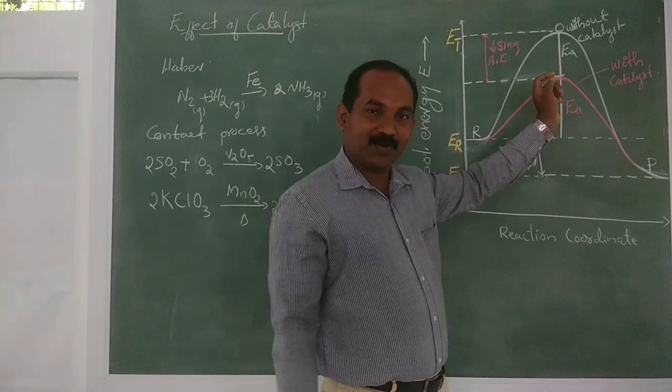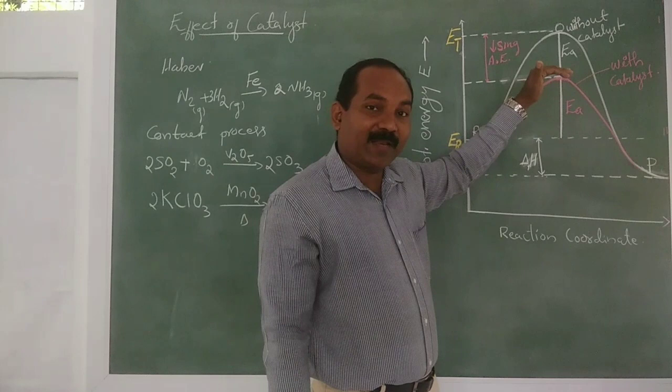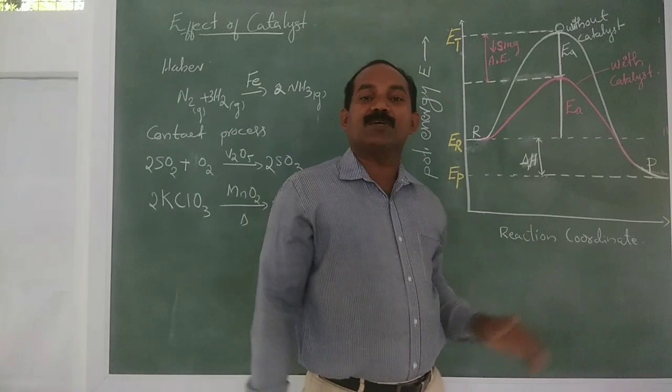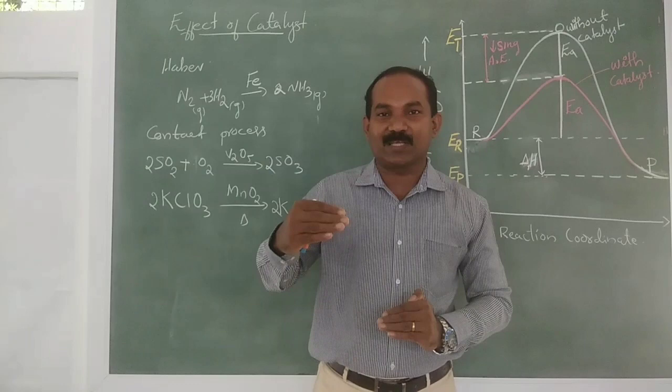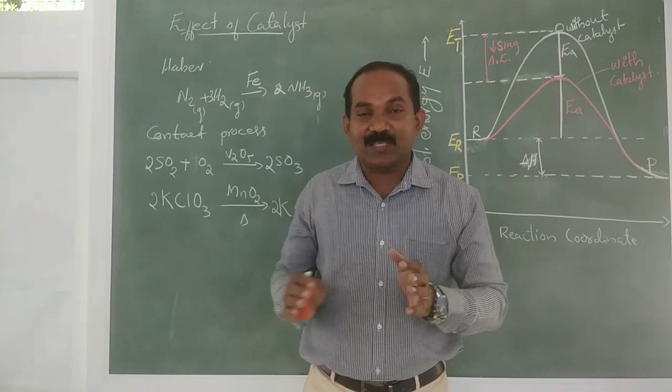The energy barrier decreases, and thus the rate of the reaction increases. The activation complex is easily formed because the activation energy decreases, and therefore the reaction is faster. This is the effect of catalyst on the rate of the reaction.